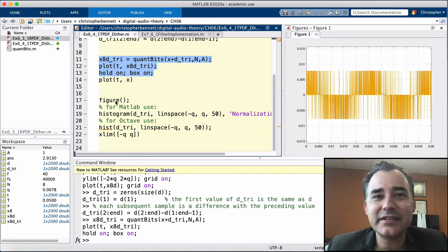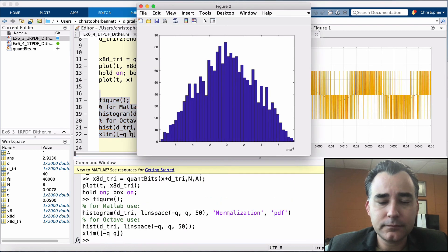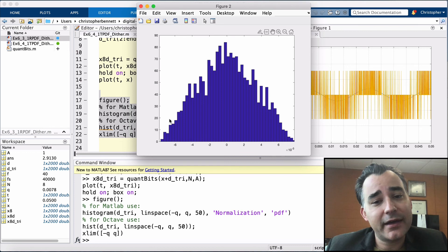Finally we can examine the PDF estimate of the TPDF dither. Note here that the range of the TPDF dither value is going to be from minus q to plus q, which is twice as large as the range for the RPDF dither. Take a look. So we no longer have a uniform or rectangular shape. We have this triangular shape. We have a larger range. So our triangular dither is actually adding twice as much noise.